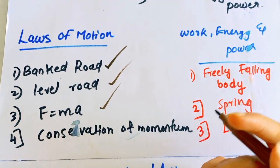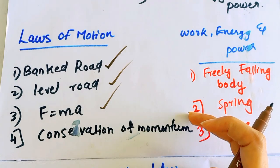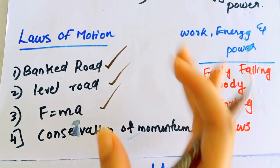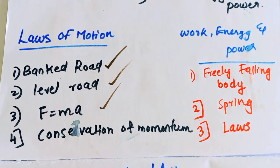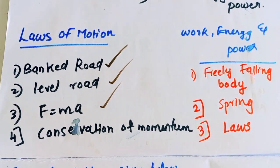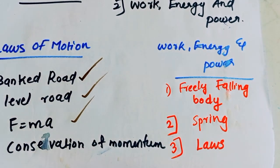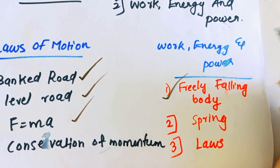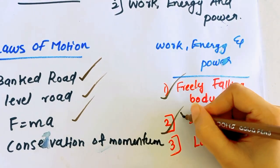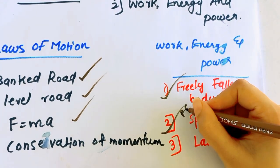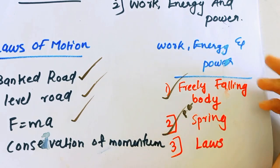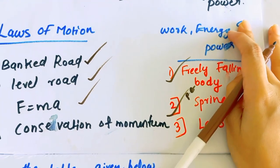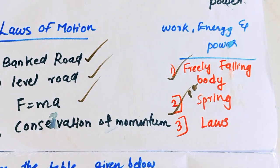There is conservation of momentum - that is an important topic. There is also the recoil of a gun, which relates to conservation of momentum. Work energy is very important. The derivation is very important. In spring, there is potential energy - that is important as the first and foremost topic.